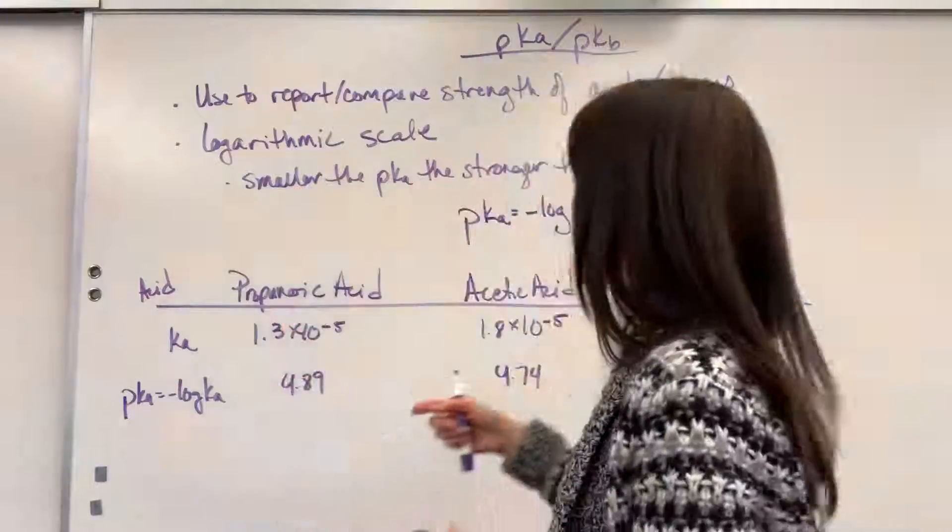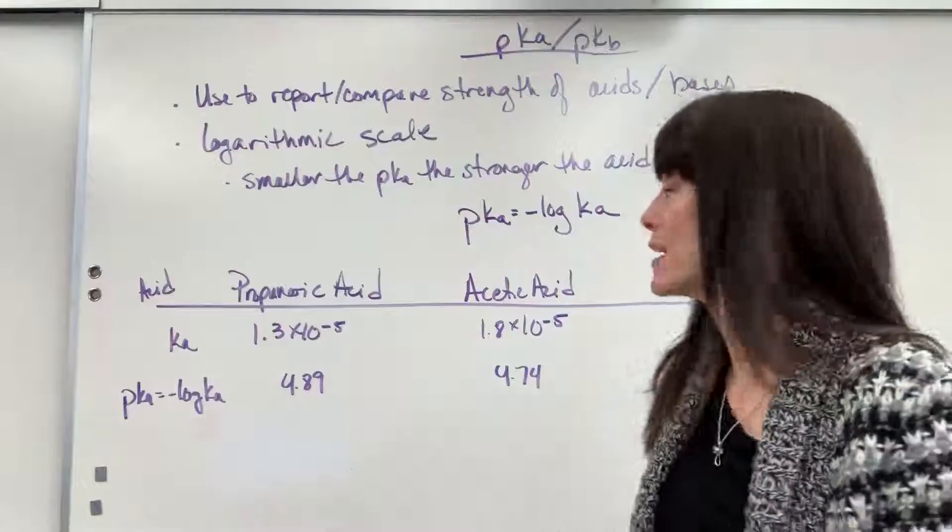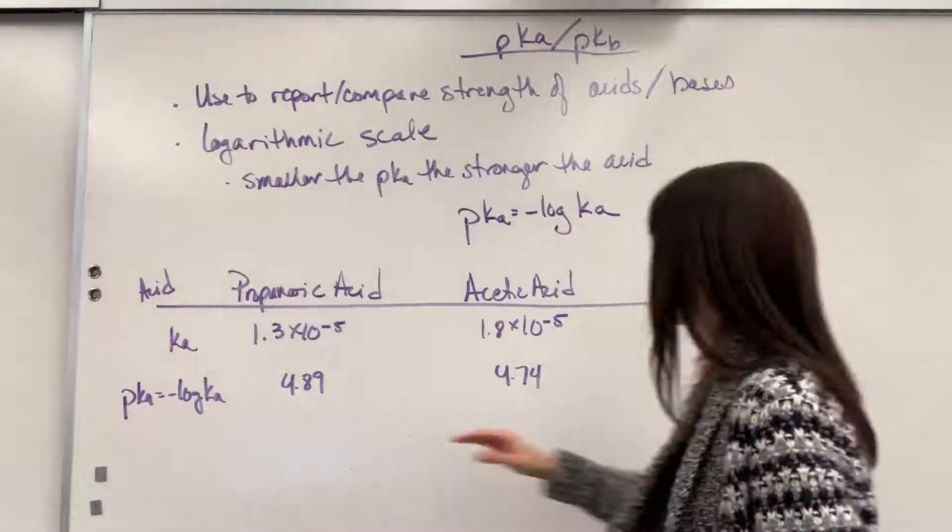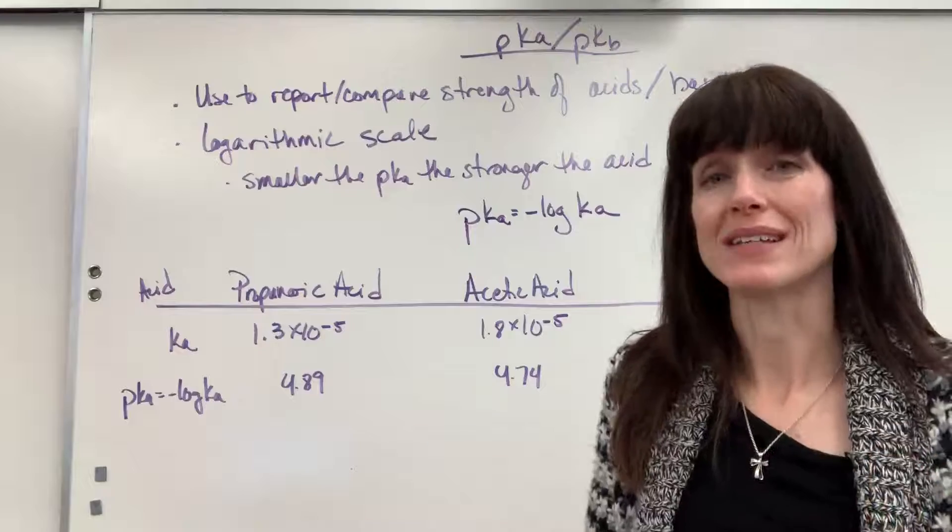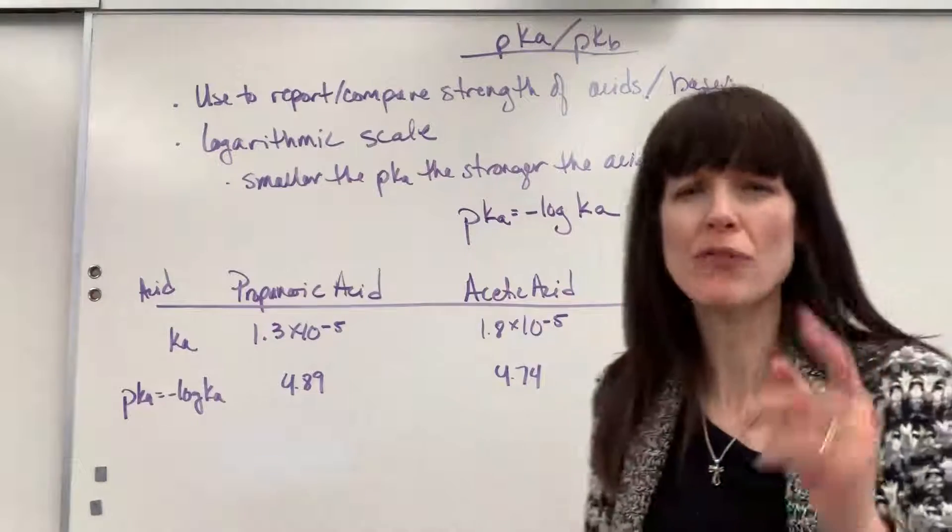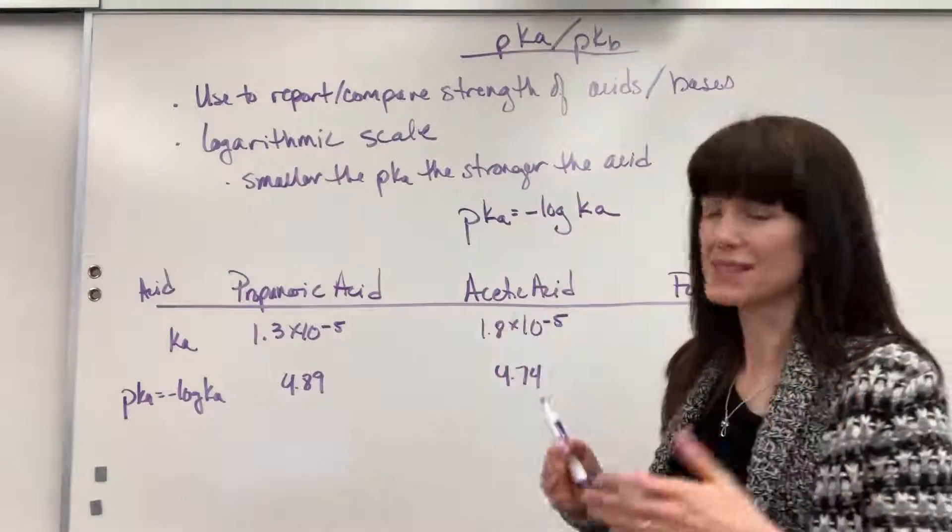The bigger the Ka, the smaller the pKa. And also remember, as you move numbers, like from a four to a seven, that's a factor of ten difference, because log is base ten. If you have questions on this, look at my pH scale, and it talks more about that base ten.